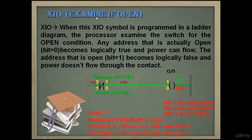XIO instruction stands for examine if open. When this XIO symbol is programmed in a ladder diagram, the processor examines the switch for the open condition. Any address that is actually open (bit=0) becomes logically true and power can flow. The address that is open (bit=1) becomes logically false and power doesn't flow through the contact.